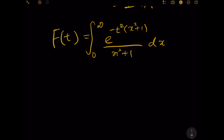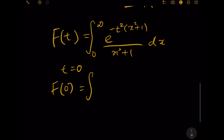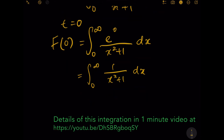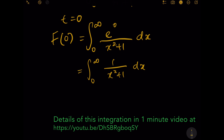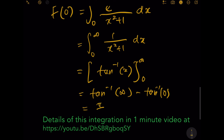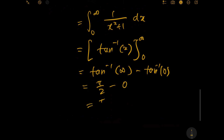First, let's evaluate F(0) by substituting t equals zero into the equation. We get the integration from zero to infinity of e to the power zero over x squared plus 1 dx. Since e to the power zero is 1, this simplifies to the integration of 1 over x squared plus 1. Evaluating this gives the tangent inverse of x from zero to infinity, which is arctan(∞) minus arctan(0) = π/2 minus 0.